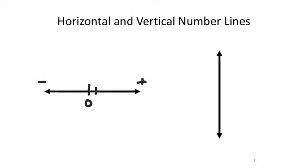Usually they'll put little marks on the number line — 1, 2, 3, 4, 5 — so to the right would be positive 5 and to the left would be negative 5. Generally, every mark represents one unit. It is possible to change the scale so that each line represents 2, 5, maybe even 10, or up to 100.